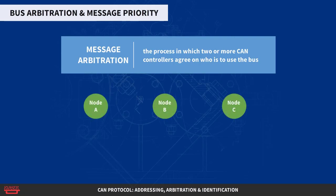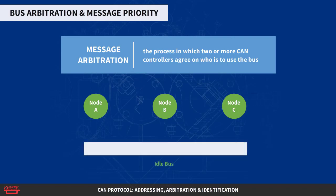Any CAN controller may start a transmission when it has detected an idle bus. This may result in two or more controllers starting a message almost at the same time. The conflict is resolved in the following way.